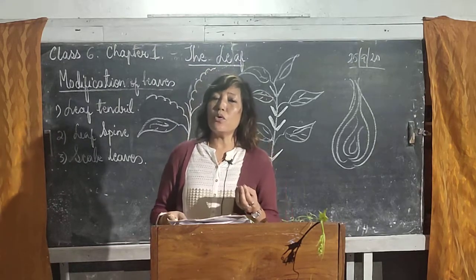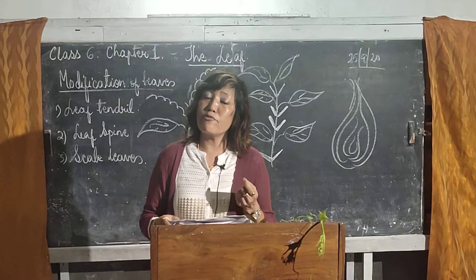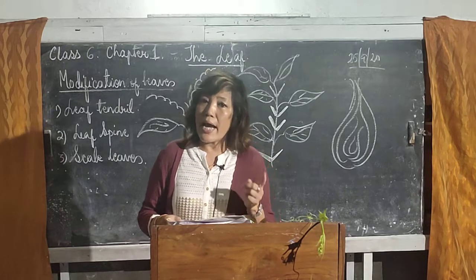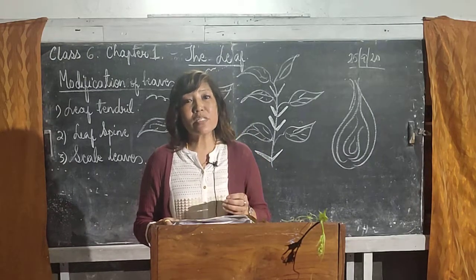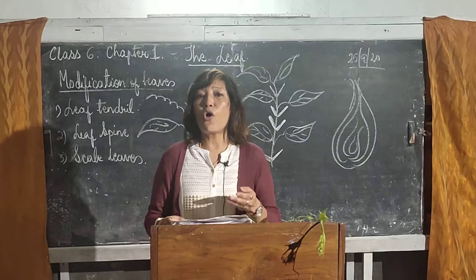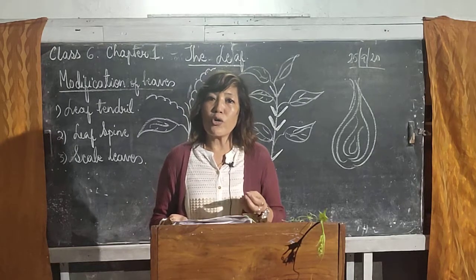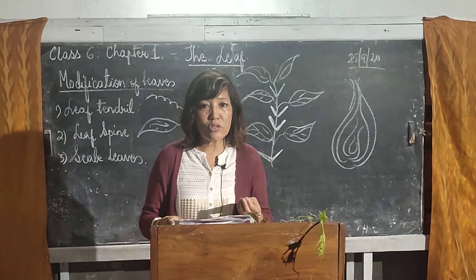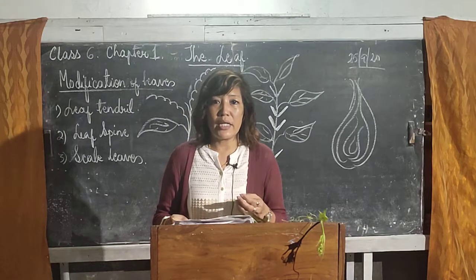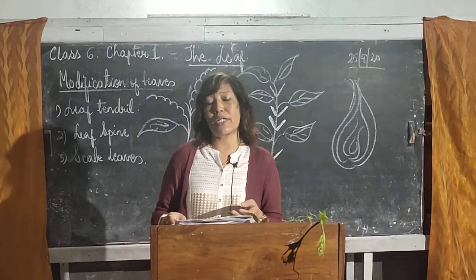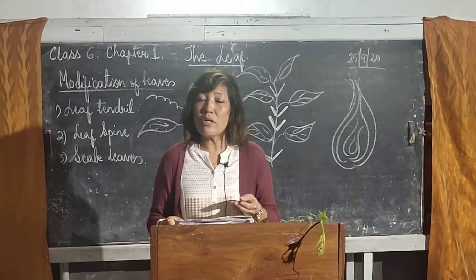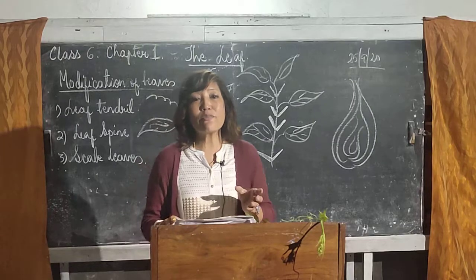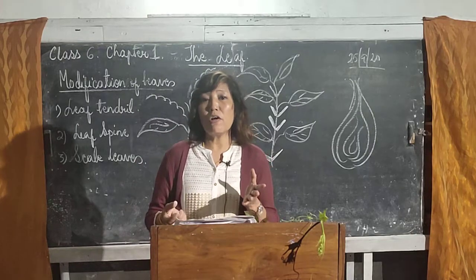We know that the function of a leaf is to prepare food by the process of photosynthesis. But in addition to this, leaves have other significances or roles to play, such as to provide support to the plant, storage of food, and for defense or to protect the parts of a plant. So to perform all these special functions, the leaves are modified into a special form.